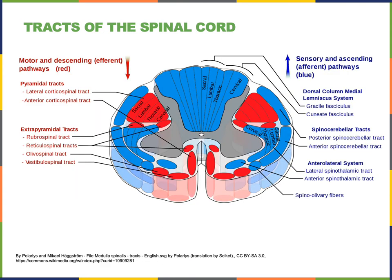This illustration shows the tracts of the spinal cord. We can see the pyramidal tracts, which are synonymous with the corticospinal tracts. There are lateral and anterior corticospinal tracts, and the corticospinal tracts carry voluntary commands from the primary motor cortex down the spinal cord.